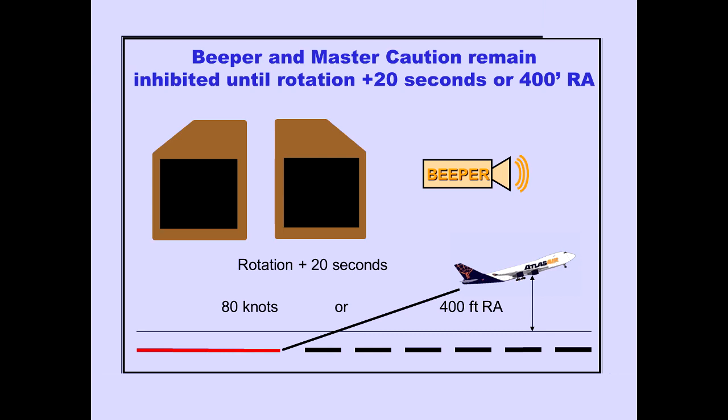The beeper and the master caution lights remain inhibited until 20 seconds after rotation or until reaching 400 feet radio altitude.